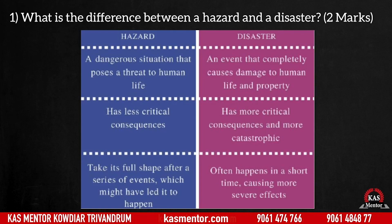In the case of a Hazard, the first difference is that it is associated with a critical consequence at a threat phase, a warning phase. If you have a Disaster, it is a high critical consequence — it is a threat phase with a high critical consequence.